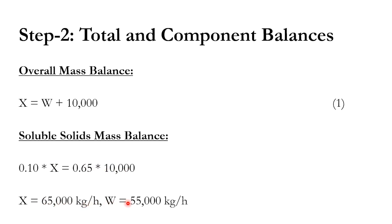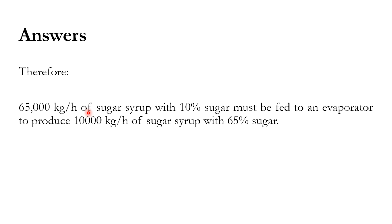From this equation, x is calculated as 65,000 kg per hour, while the water evaporated w is 55,000 kg per hour. So 65,000 kg/hr of feed is introduced to the evaporator, 55,000 kg/hr of which is evaporated, and the remaining 10,000 kg/hr is our final product containing 65% sugar.